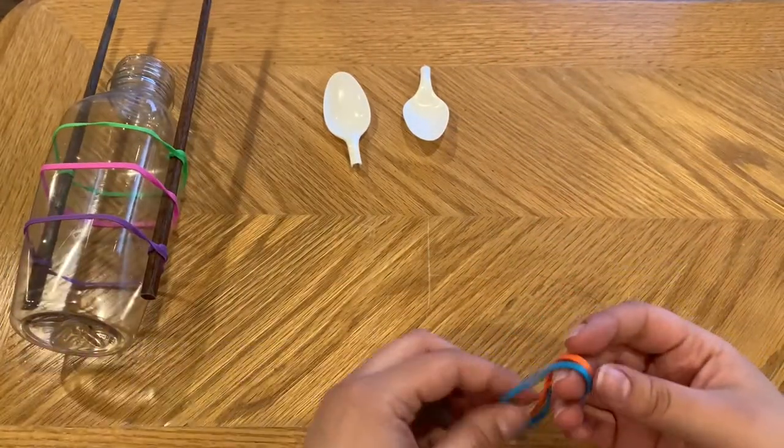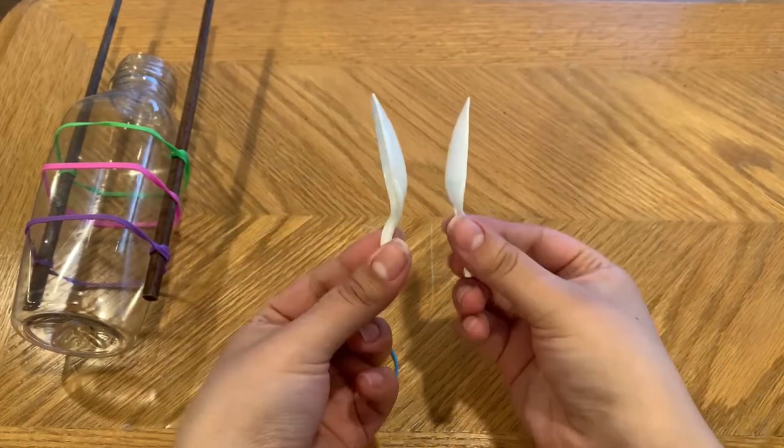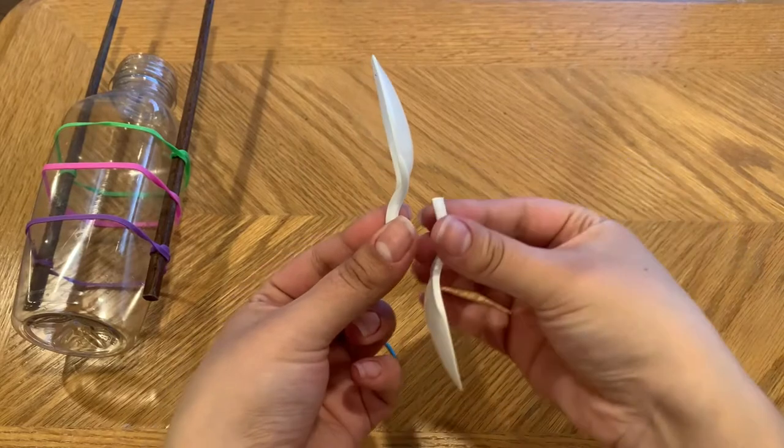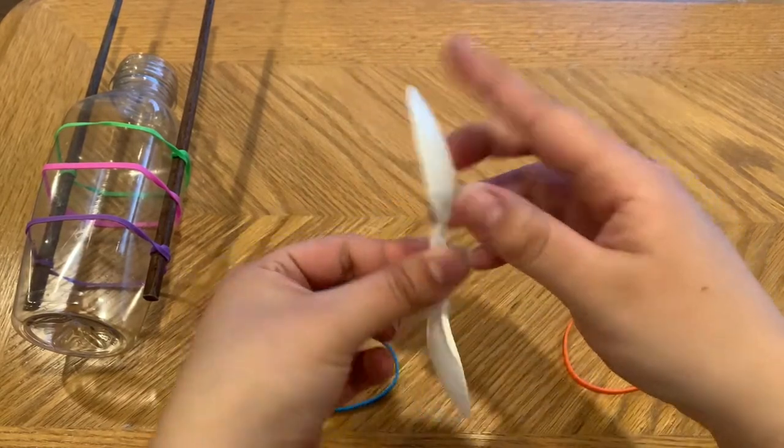Our next step is to put together our propeller. A little tip I had was putting them back to back and then flipping one upside down, and that is how you can make your propeller.